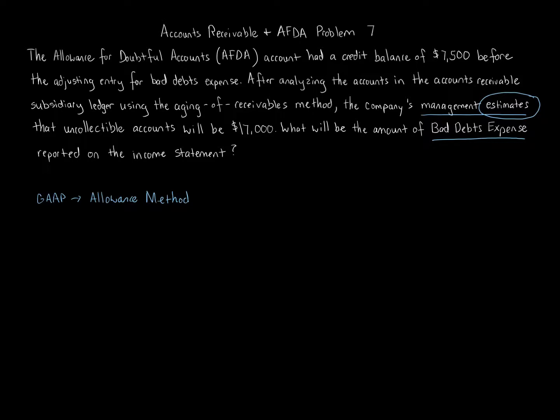Now there's two major methods. There's the percent of net credit sales method, and there's also the Aging of Receivables or Aging of Accounts Receivable method. There are other methods, but these are the two most common you're most likely to see in practice on exams. We're told here that this company uses the Aging of Receivables method when determining what the estimate is for bad debt expense. Now specifically, the company's management estimates that uncollectible accounts will be $17,000.